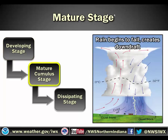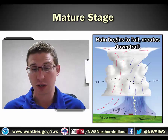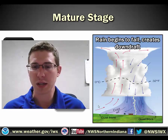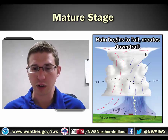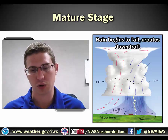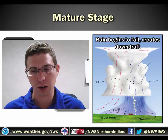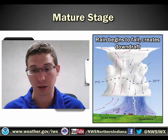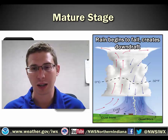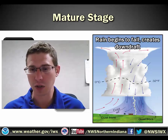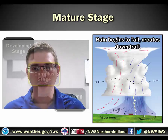The next stage of storm development is the mature stage. In this stage, rain begins to fall, and that creates a downdraft. You can see the warm, moist air rises in this portion of the storm, and then the cool air sinks in this portion of the storm, which actually causes a gust front on the outward portion of it. That's why sometimes you might get windy conditions out ahead of a storm, along the gust front.